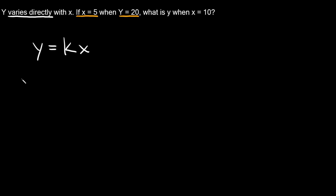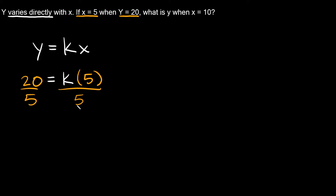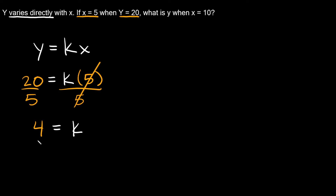So y is equal to 20, and that's equal to k times x, which is 5. So 20 is equal to k times 5. To solve for k, just divide both sides by 5. The 5s cancel out, so we're left with k is equal to 20 divided by 5, which is 4. Now that we know k, we can write the equation as y is equal to 4x.